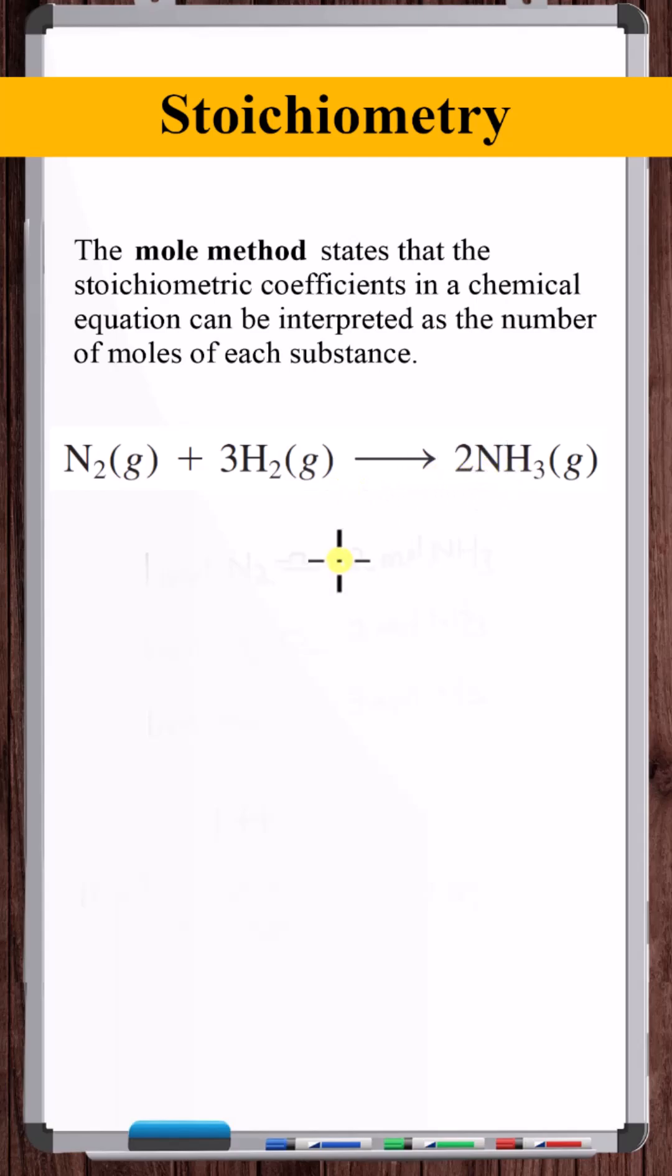This also leads to the concept of stoichiometric equivalency, which for this chemical equation says that one mole of N2 is equivalent to two moles of NH3, three moles of H2 is equivalent to two moles of NH3, and one mole of N2 is equivalent to three moles of H2.